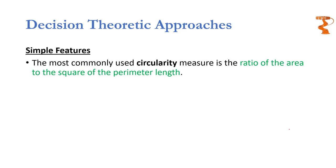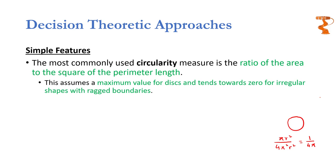To encode circularity, there are a number of circularity measures available, but the most commonly used is the ratio of the area to the square of the perimeter length. For a circle, the area is pi*r² and the square of the perimeter is 4*pi²*r², giving a value of 1/(4*pi). If the shape deviates from a pure circle the value drops. This measure assumes its maximum value for disks and tends towards 0 for irregular shapes with a ragged boundary, because such a shape would have a similar area to a circle but a much larger perimeter, causing the circularity measure to drop.